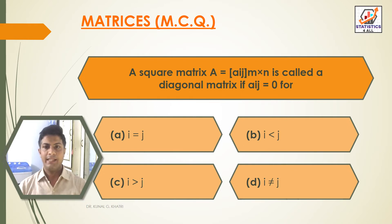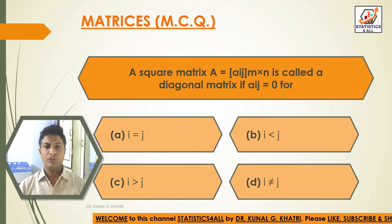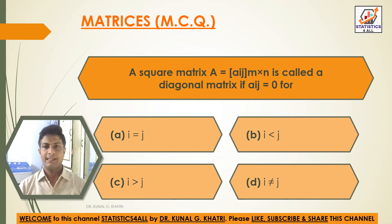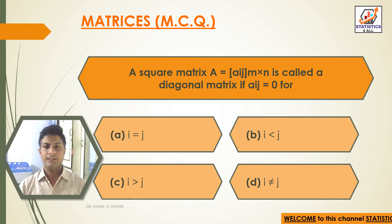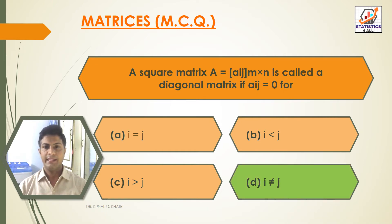Next question: a square matrix A = A(i,j) of M×N is called a diagonal matrix if A(i,j) is equal to 0 for — option A: i equal to j; option B: i less than j; option C: i greater than j; option D: i not equal to j. The answer is option D, that is i not equal to j. A square matrix A(i,j) of M×N is called a diagonal matrix if A(i,j) = 0 when i ≠ j.